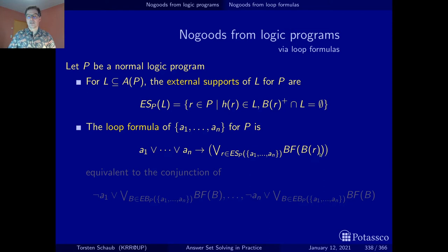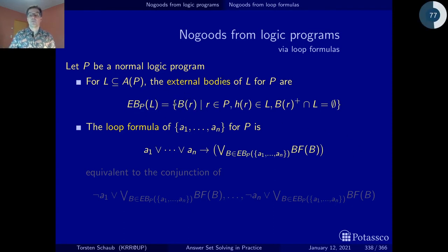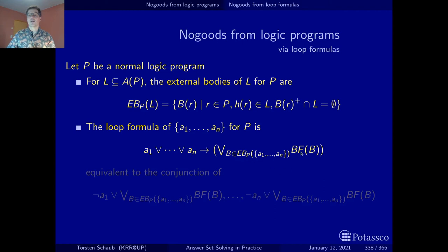Formally, this is the body of such an external support rule. We form a conjunction — the body formula — which is the conjunction of the positive and negative body literals. If one of these is true, we have an external support. In our characterization of no-goods, we rely on variables abbreviating the body. We can reformulate this in terms of bodies: we replace the external support by the external body and directly form the body formulas. It is a bit more handy to talk about the bodies than about the rules.